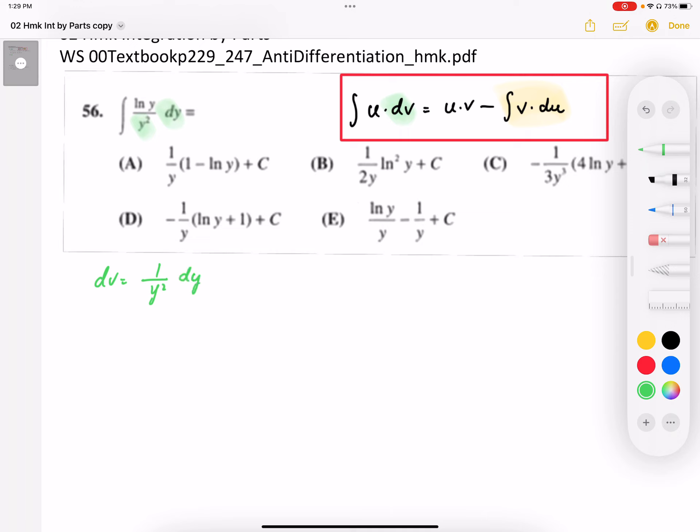Okay, so from there we can integrate this to generate the v part. The integral of one over y squared is negative one over y. So there we have our dv; we selected our dv, we generated our v.